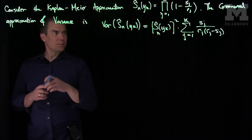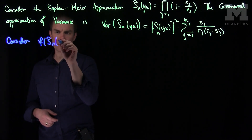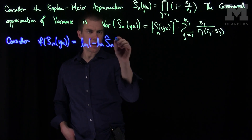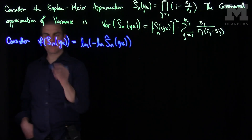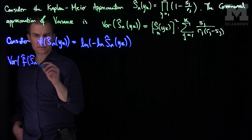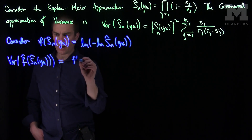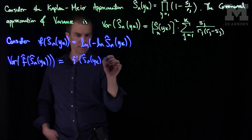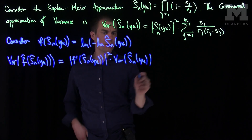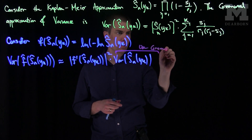What we'll do now is construct a transformation of this expression. Consider f(Sn_hat(yk)) = log(−log(Sn_hat(yk))). The Delta Method tells us that Var(f(Sn_hat(yk))) is approximately f'(Sn_hat(yk))^2 times Var(Sn_hat(yk)). We know how to compute this variance term — we can use Greenwood to approximate it.